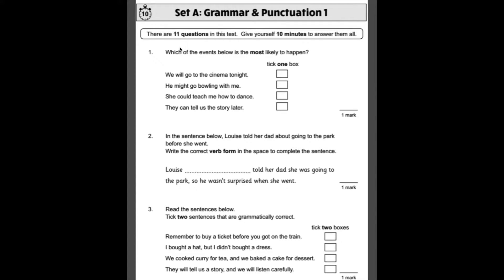Number one, which of the events below is most likely to happen? The key to these ones is to look for the modal verb, which gives away how likely it is to happen. So looking at the first one, we will go to the cinema tonight. That's the modal verb, will. He might go bowling with me. That's the modal verb, might. She could teach me how to dance, could is the modal verb, and they can tell us the story later. That is the modal verb as well. So which one is the most likely to happen? Well, if something might happen or it can happen or it could, we don't know for definite that's going to happen. So if something will happen, then that's the one that's most likely to happen because it definitely will. So that's the first one. We will go to the cinema tonight.